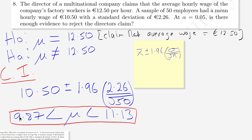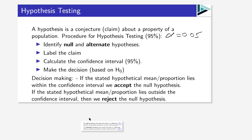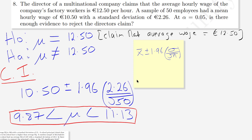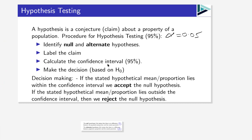This confidence interval, based on the sample, tells me we're 95% sure that the average is somewhere between €9.87 and €11.13. The next step is to make the decision based on the null hypothesis. The stated hypothetical mean in our example was €12.50. If that lies within the confidence interval, we do not reject the null hypothesis.